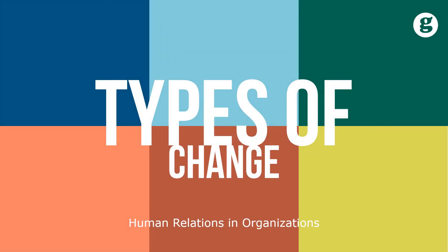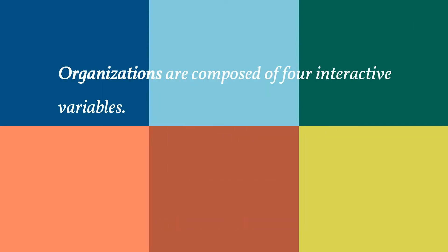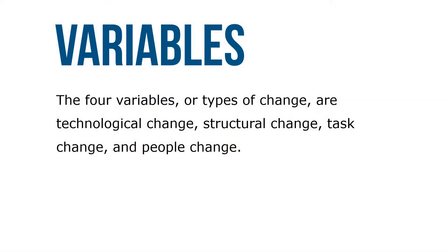Let's take a look at types of change. Organizations are composed of four interactive variables. The four variables or types of change are technological change, structural change, task change, and people change.